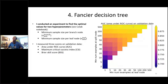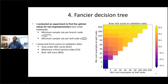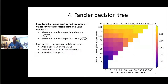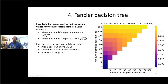In the hyperparameter experiment, I play with values for two stopping criteria — minimum sample size per branch node and minimum sample size per leaf node — and find values that lead to almost no overfitting. When you make these stopping criteria values higher, you mitigate overfitting.